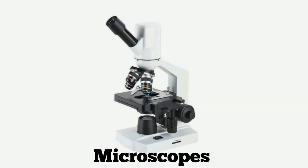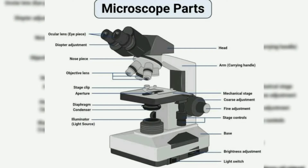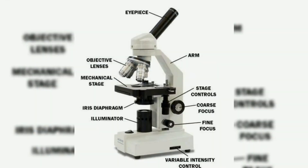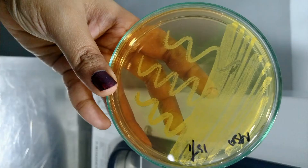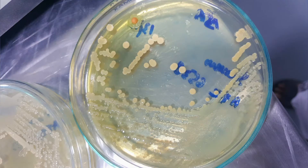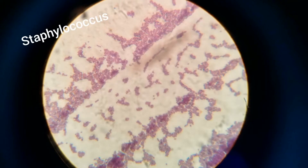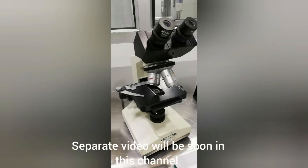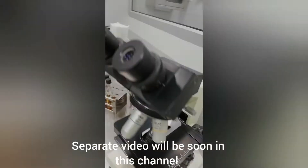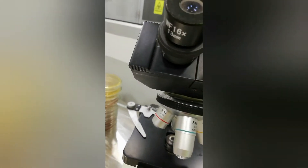Microscope. There are a variety of microscope models available in the market. In a pharmaceutical microbiology lab, a microscope is used when we need to confirm environmental isolates, when we want to confirm contamination in media growth, and when we receive a pure culture strain. After cultivating in media, we examine the isolated colonies with the microscope. A separate video on microscopes will be coming soon to this channel.